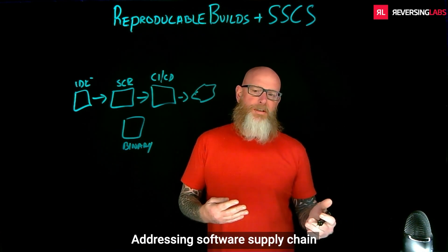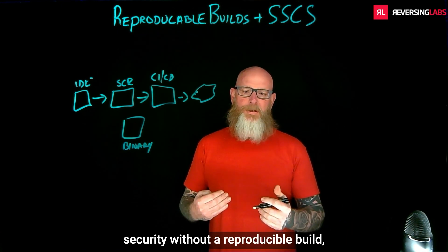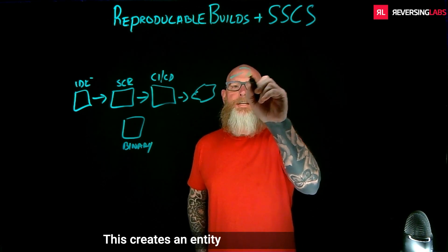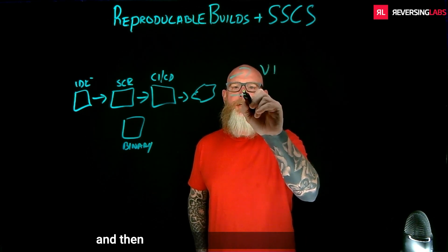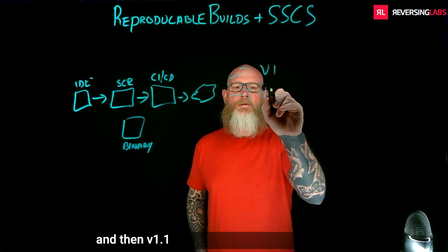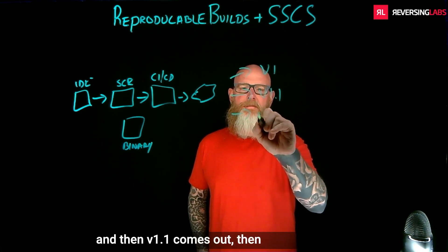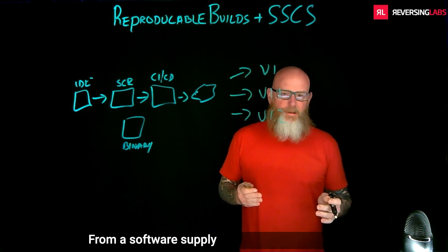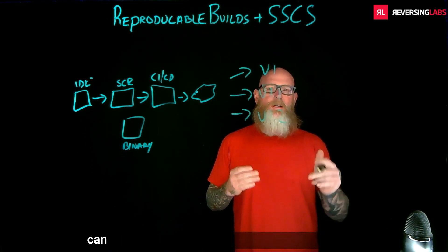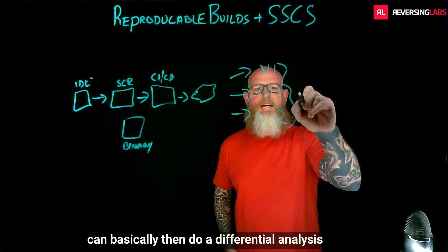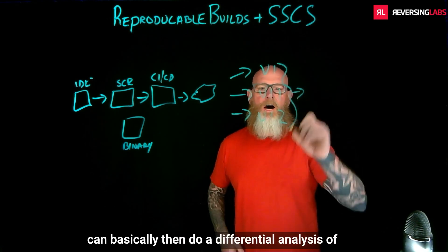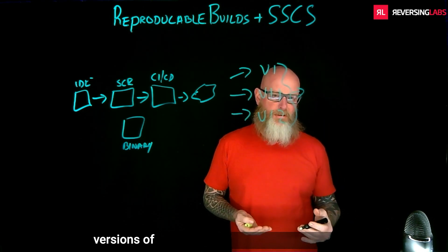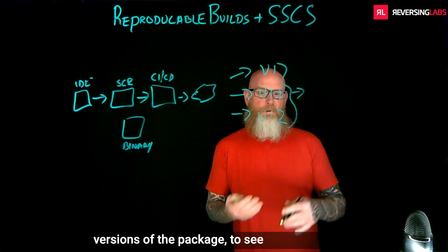Addressing software supply chain security without a reproducible build — and I'll define that again in a second — creates an entity where it's version 1, then 1.1 comes out, then 1.2 comes out. From a software supply chain risk standpoint, you can basically do a differential analysis of one pipeline creating different versions of a package to see what's changed.